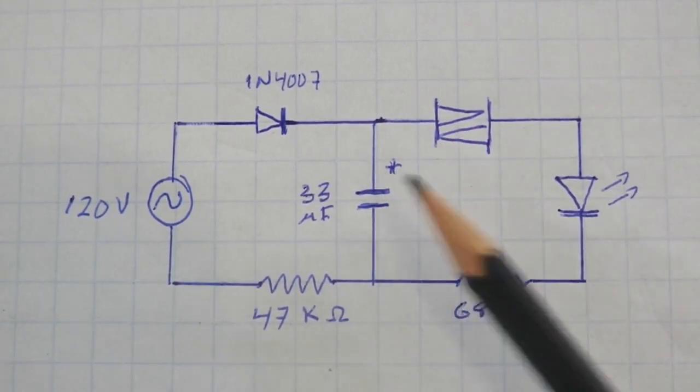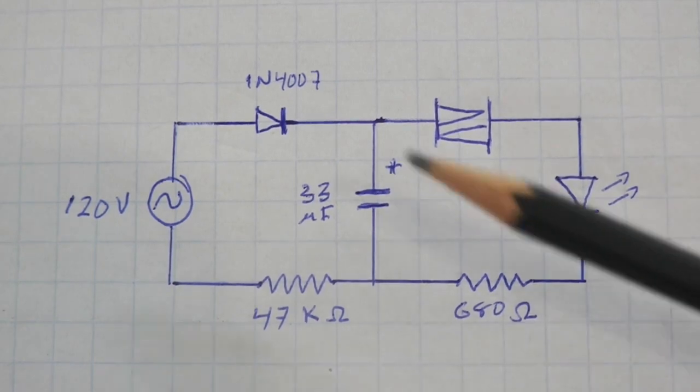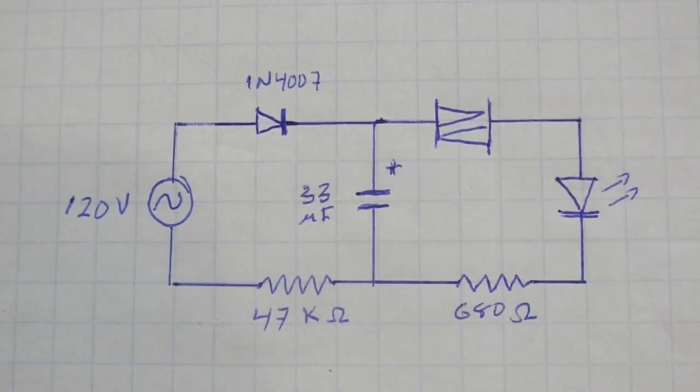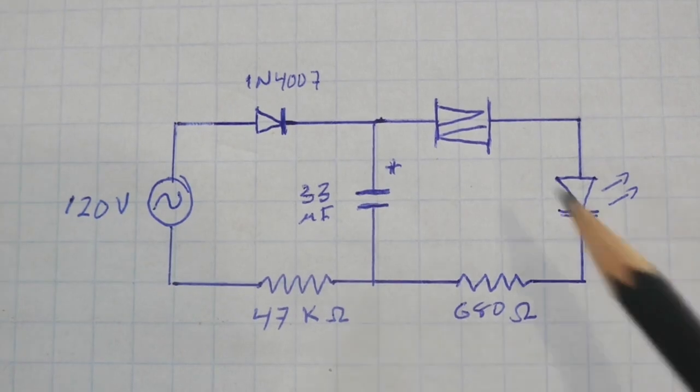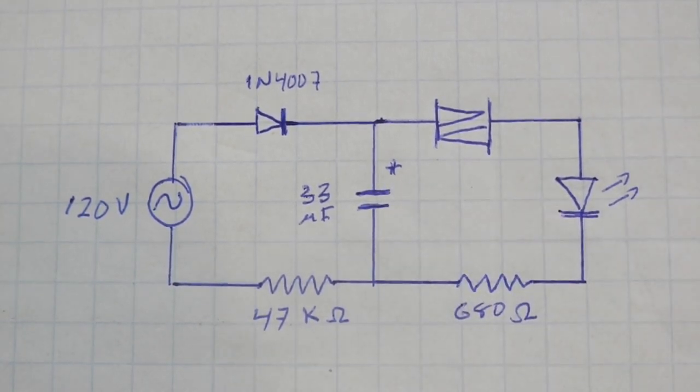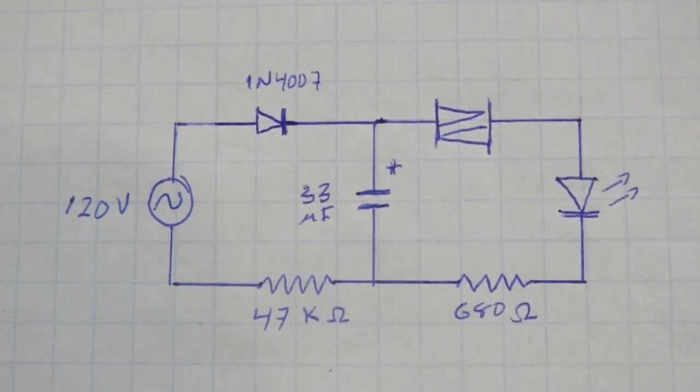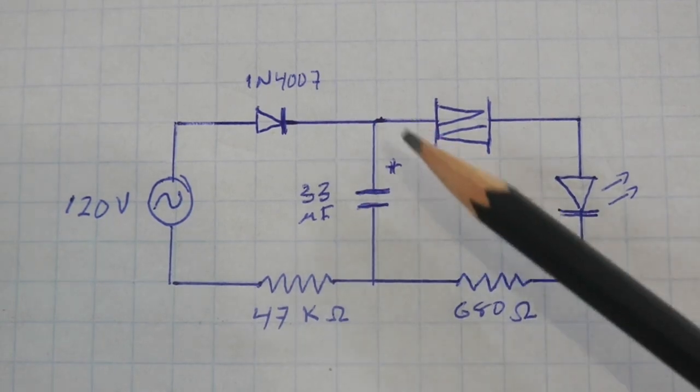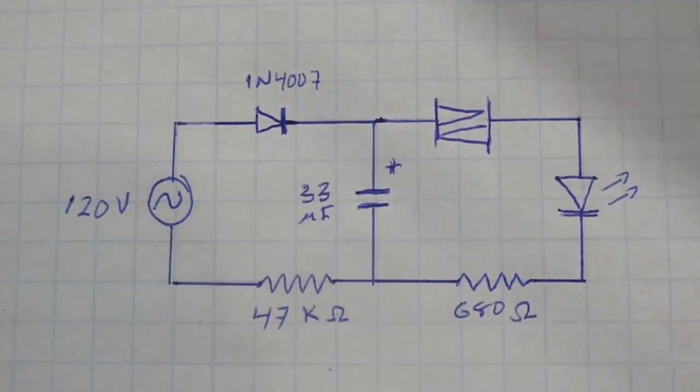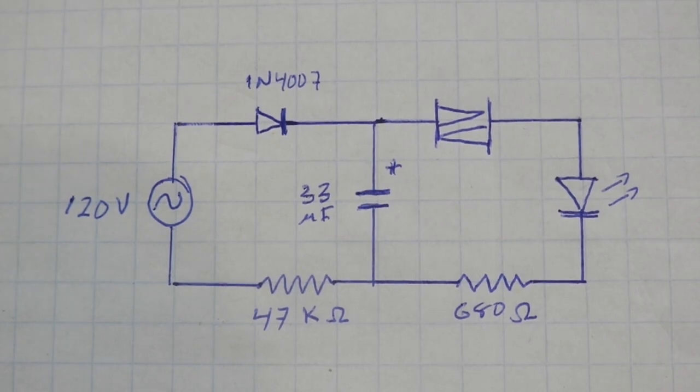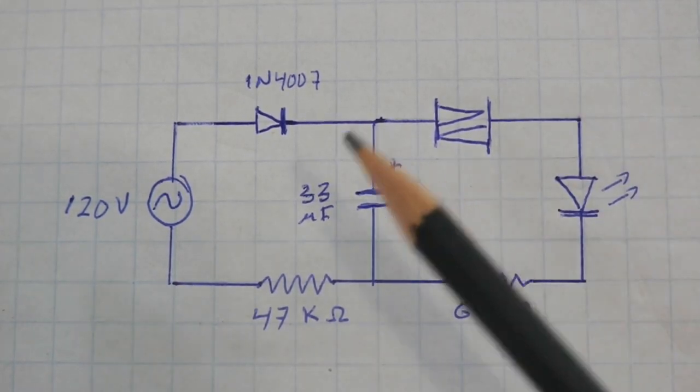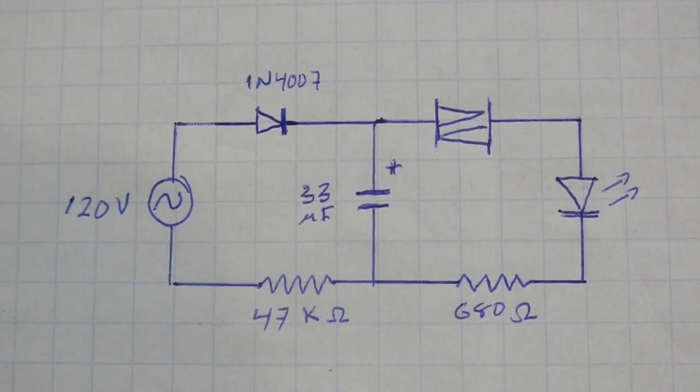This capacitor must be rated at least at 30 volts, which is the maximum value before the DIAC closes. So a voltage value of 63 volts is okay, or 50 volts. However, notice that if for some reason this part of the circuit is open and the DIAC does not act, the capacitor will charge at the full line voltage at 120 volts. Therefore, it is recommended that this capacitor is rated at a voltage larger than 120 volts.